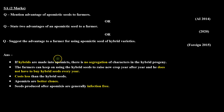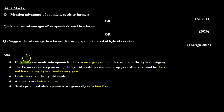For example, farmers produce better varieties using hybrid seeds. But with hybrid seeds, the problem is that when we sow them, the characters are segregated. But if hybrids are converted to apomyctic seeds, the characters are not segregated.